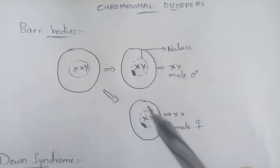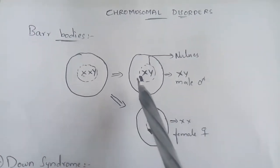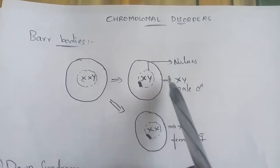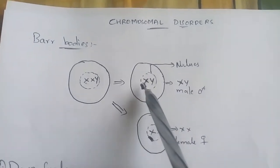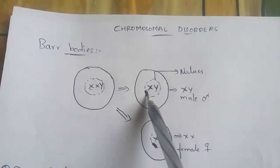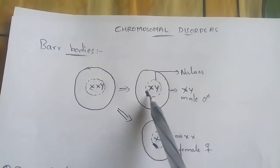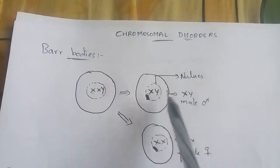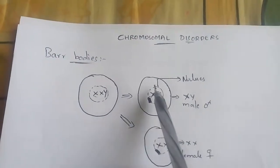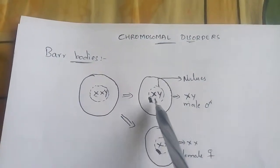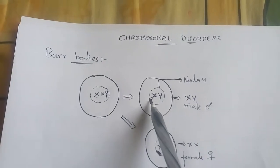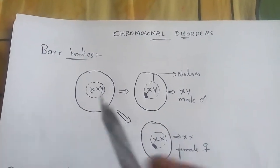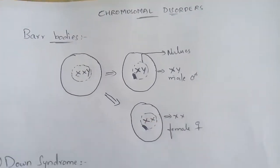It will be inactivated, and this will expose the character of the syndrome. For example, take this as XY — one of the X chromosomes will be attached to the wall of the nucleus. So what remains is XY in the nucleus. XY means male. The X chromosome will be inactivated but it still shows expression. This is known as a Barr body.